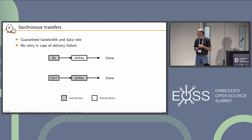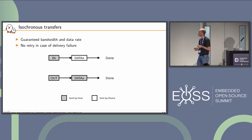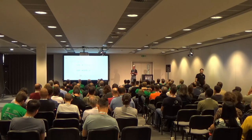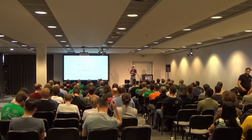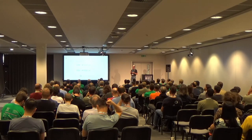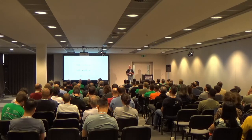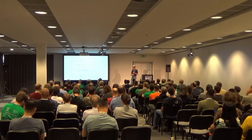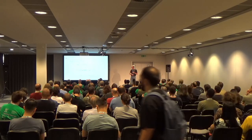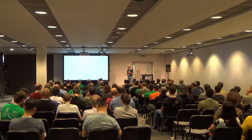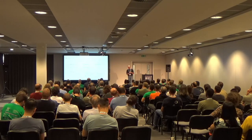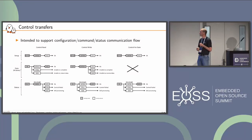Isochronous transfers guarantee bandwidth and data rate — they are the periodic transfers in the USB world. There is no retry in case of failure, and there is no handshake packet in an isochronous transfer. The last and most complicated mandatory transfer type is the control transfer, used for configuration, commands, and status on the device. It is made of three stages.